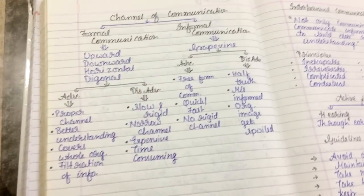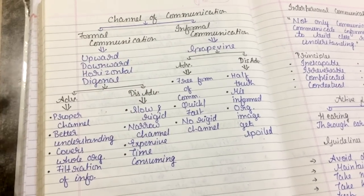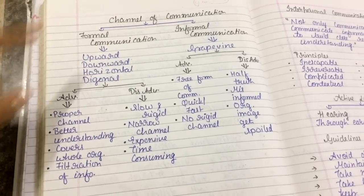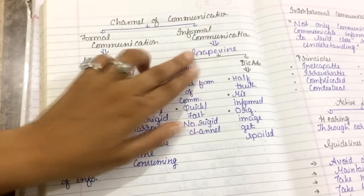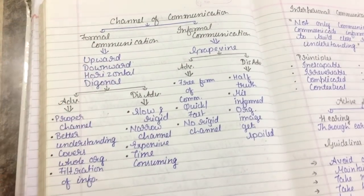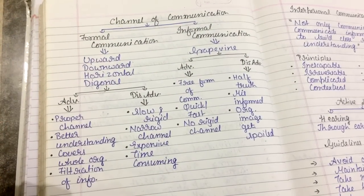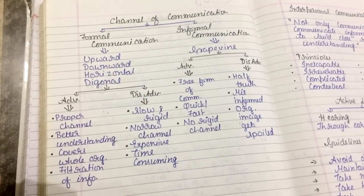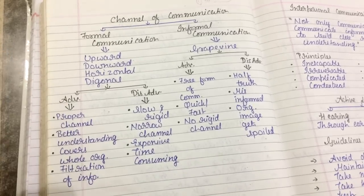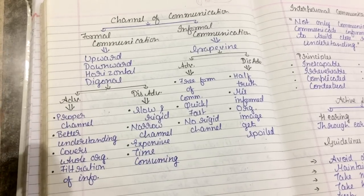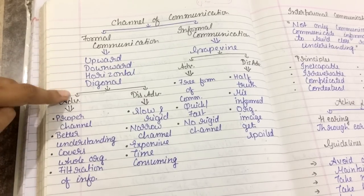Channels or forms of communication: there can be various forms. There can be formal communication and informal communication. Formal communication refers to all communication where you need to talk to somebody professionally, on a professional basis. That can be upward, downward, horizontal, and diagonal.